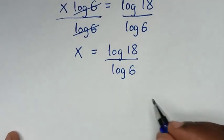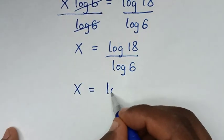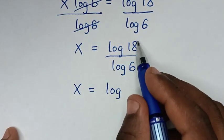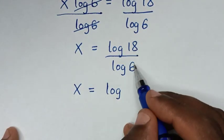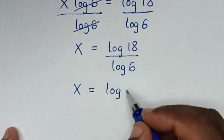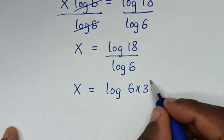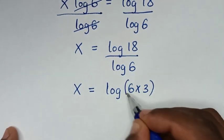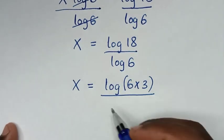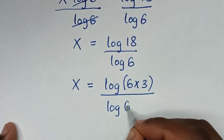Then, in the next step, x is equal to log of 18 to the base 6. Now, 18 is the same as 6 times 3, so we have x equal to log of 6 times 3, all over log of 6.